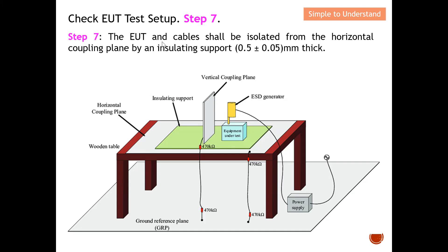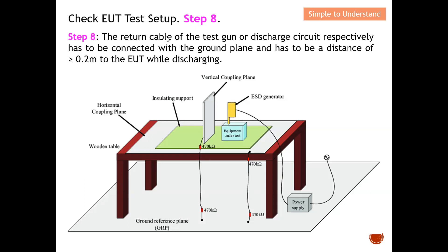Step number seven: the EUT and cables should be isolated from the horizontal coupling plate by an insulating support approximately 0.5 mm thick. This insulating support provides separation between the horizontal coupling plane and your EUT or DUT.